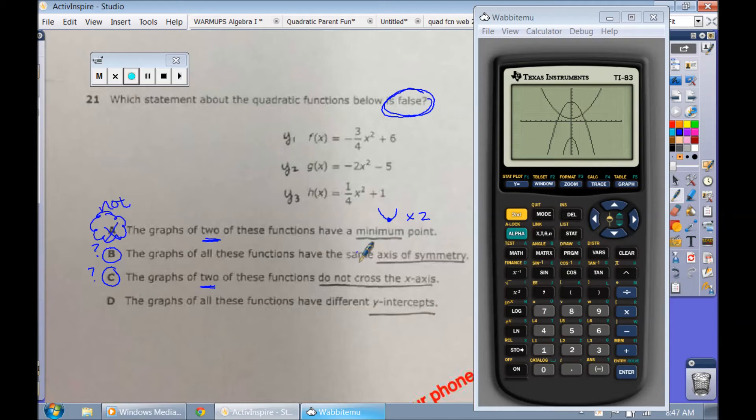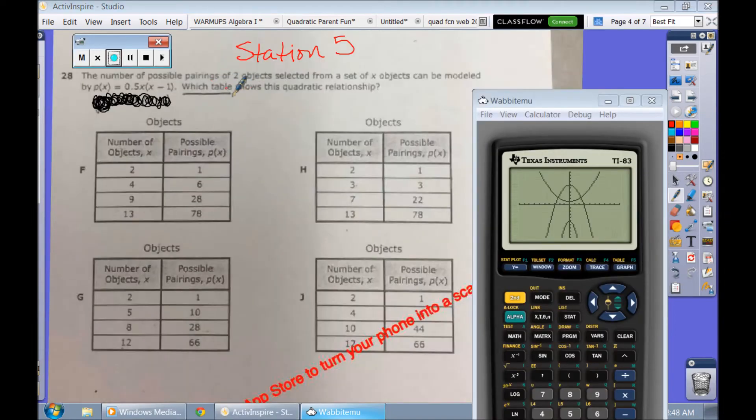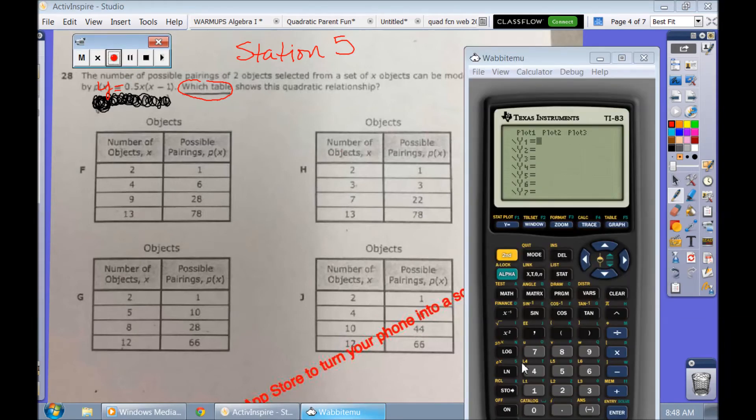All right. In this one here, all you had to do was punch this particular equation in your calculator. That P of x is just a fancy way of saying y equals. So we're going to clear everything out, punch this in the calculator. And then all we're going to do is see which table matches up to this particular graph here. So go to your table. 2-1. If I look at 2-1, all the tables have 2-1. But what about 3-3 on this one? Well, yeah, I see 3-3, but I don't see 7-22. I see 7-21. So that's not going to work.